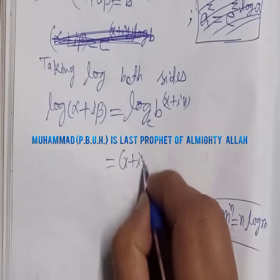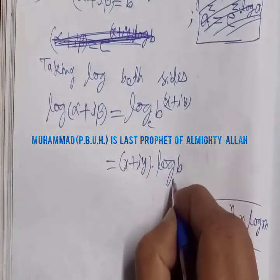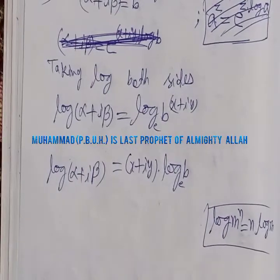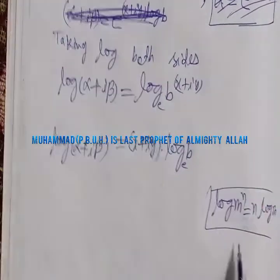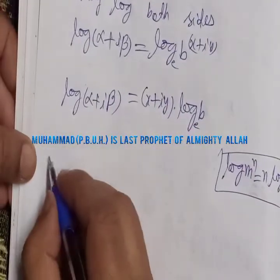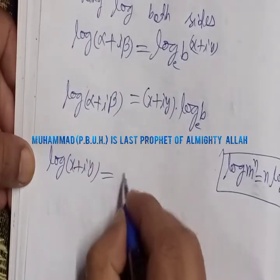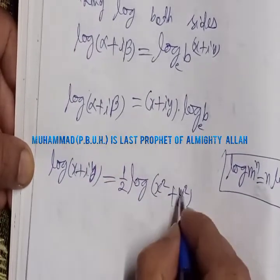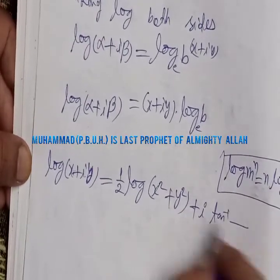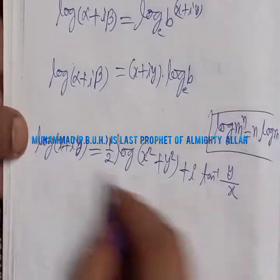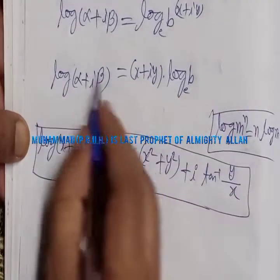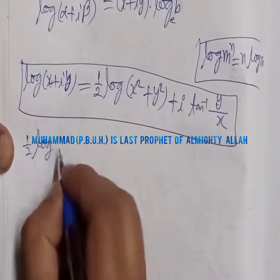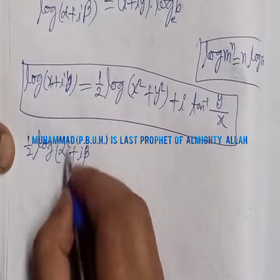On the left-hand side, we apply the logarithm formula for a complex number. The formula is: log(x + iy) = (1/2)·log(x² + y²) + i·tan⁻¹(y/x). Applying this, with x replaced by α and y replaced by β, the left-hand side becomes (1/2)·log(α² + β²) + i·tan⁻¹(β/α).